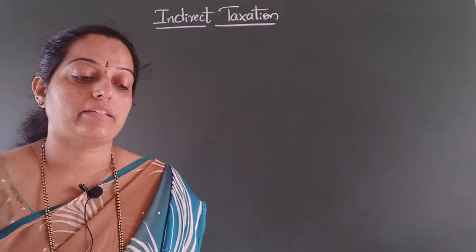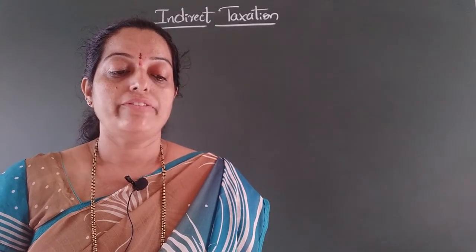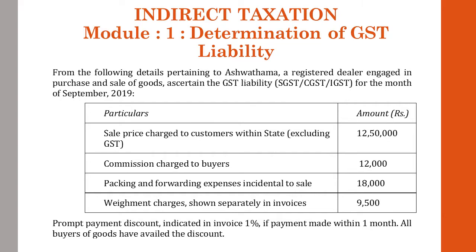You can refer the slide for the problem. From the following details pertaining to Ashwatthama, a registered dealer engaged in purchase and sale of goods, we need to determine GST liability — that is SGST (State GST), CGST (Central GST), and IGST (Integrated GST) — for the month of September 2019.